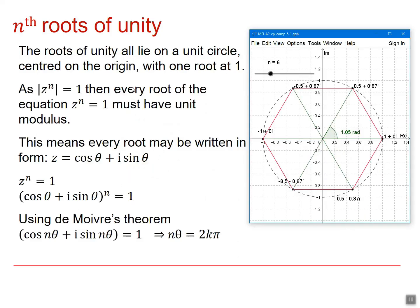We've also seen that the roots of unity all lie on a unit circle, whatever the power, with one root at 1. So because the mod of z to the n is equal to 1, every root of the equation z to the n equals 1 must have a unit modulus. And this means that every root can be written in the form z equals cos theta plus i sine theta.